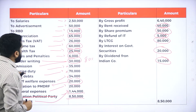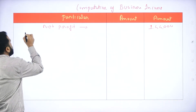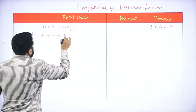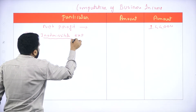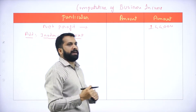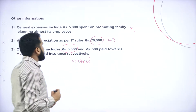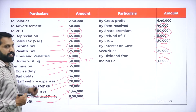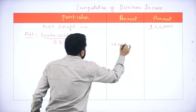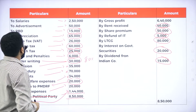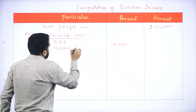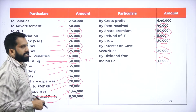Under inadmissible expenses, we take the items we already marked one by one. Salary is over. Advertisement — no. RBD is 15,000. After RBD, the next one is Depreciation — 65,000.